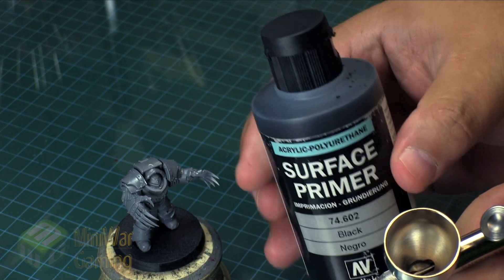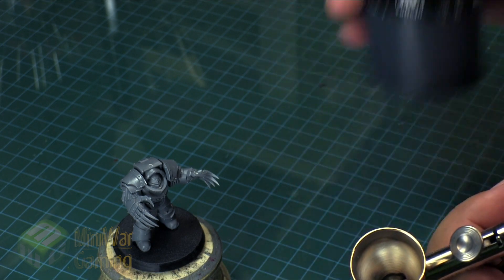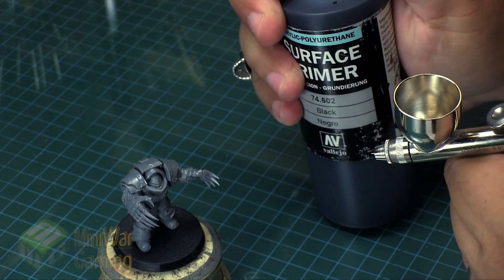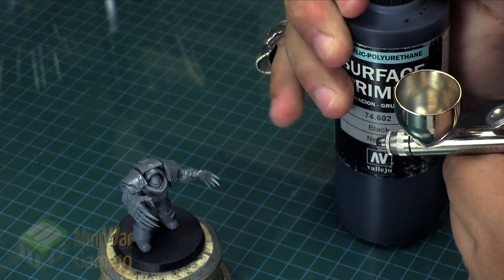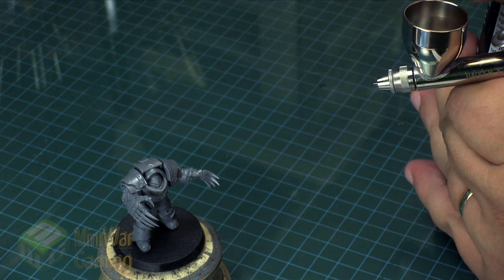Even with these surface primers here, always make sure you give these things a really good shake before you use them. So after you've given it a really good shake, I tend to not use all that much. If I'm going to be spraying even five to ten models, I usually don't use that much in the well.